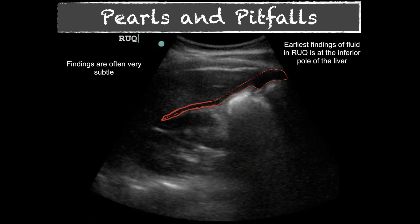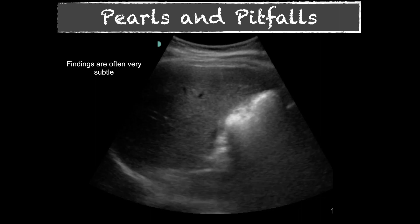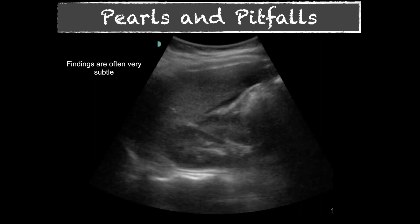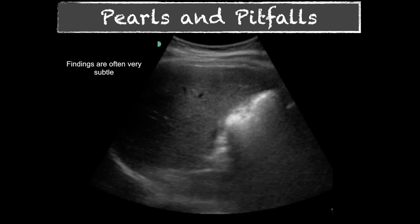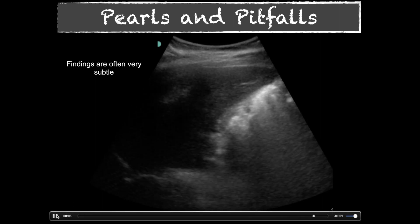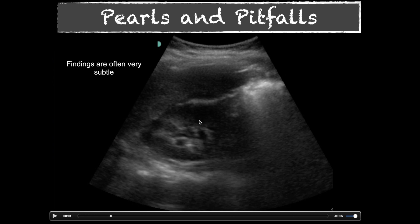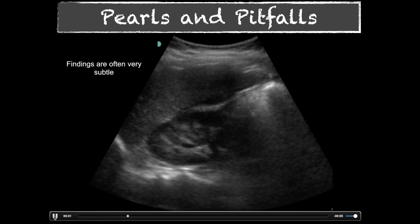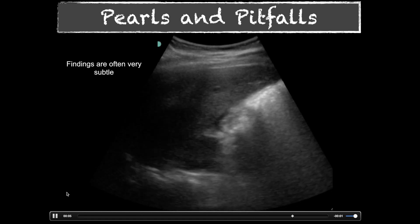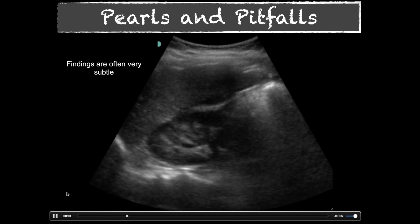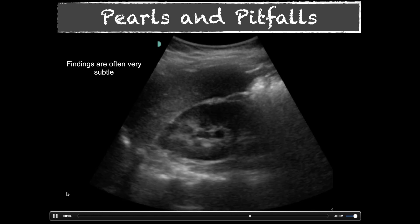Let's look at a video of the same patient. You can see the rib shadow here, and this is what we talked about — a rib giving us shadowing. You could get this image and call it a negative study when it's really not. As we fan through, we start seeing that fluid. That's why it's important to work around those rib shadows. Come down and get the inferior pole of the liver as we saw in the prior example.